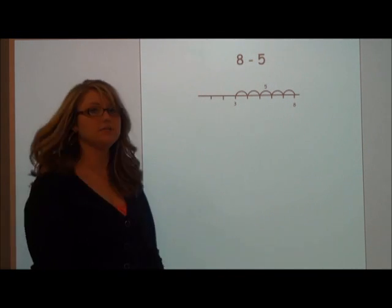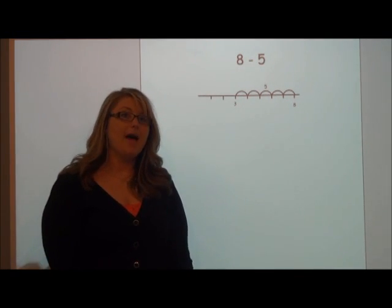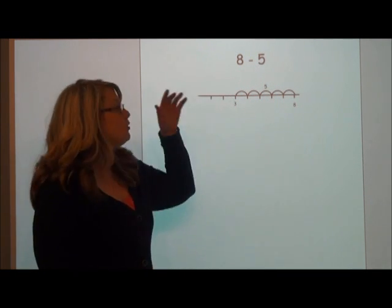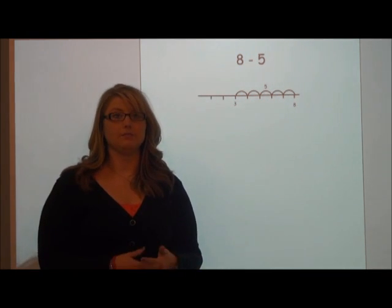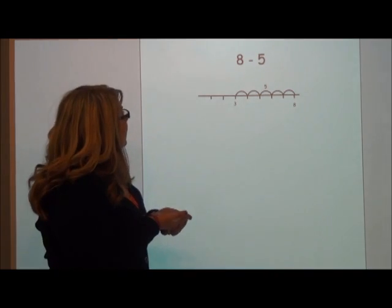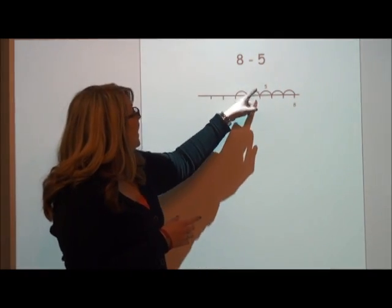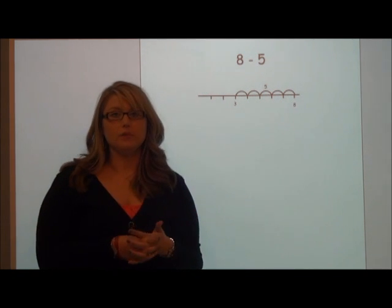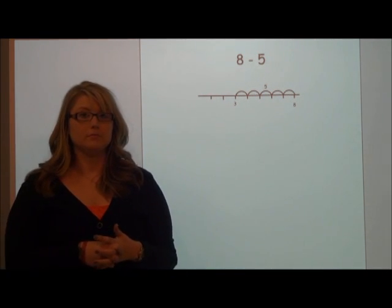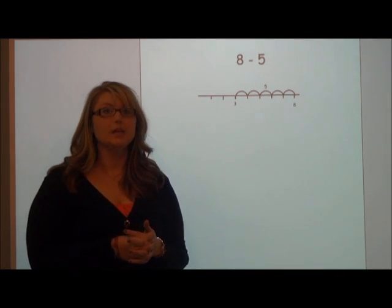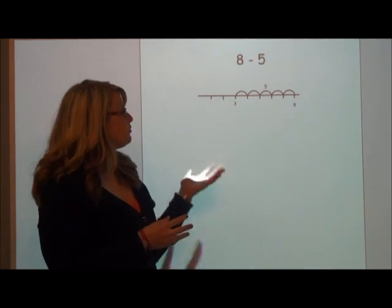Now, let's look at one using subtraction. Let's look at 8 minus 5. This time, I know what the whole amount is. The whole amount is 8, and I am going to take away part of 8. How much are we taking away? We are going to take away 5. So, if I start with 8, and take away 5, the part I am left with is 3. So, if we are looking at the parts that make the whole, the 8, the parts that make the 8 were 3 and 5.